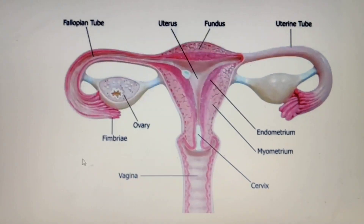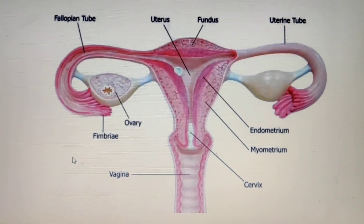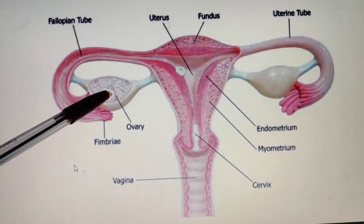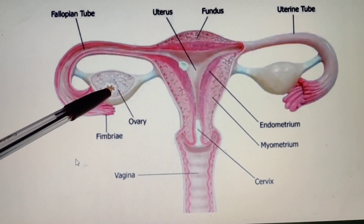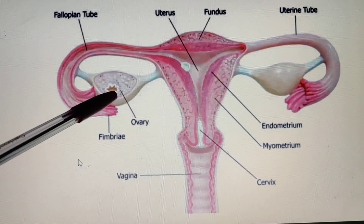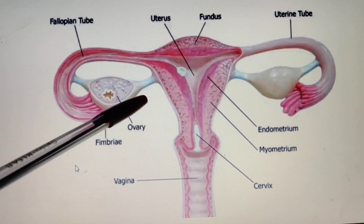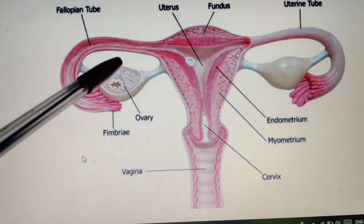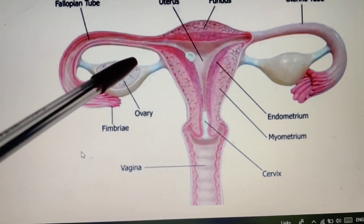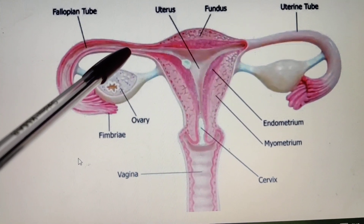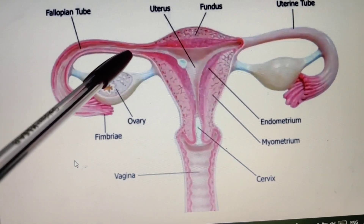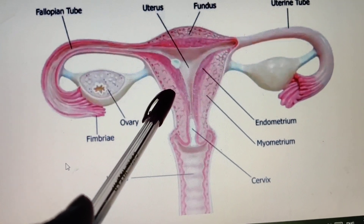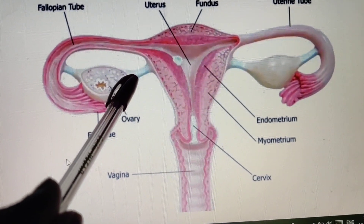This is the diagram of the female reproductive unit. It starts with the ovary. These ovaries are located on each side of the lower abdomen, and the shape is almond-like. These ovaries are attached with the wall of the uterus by the help of this ligament.